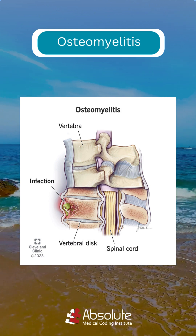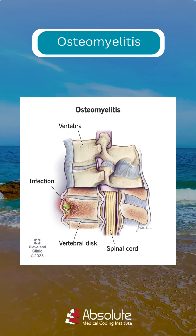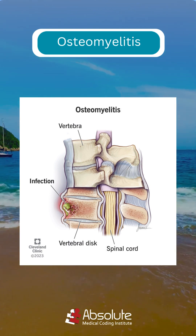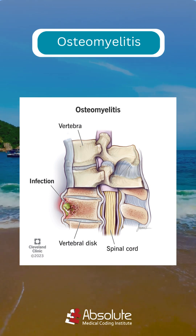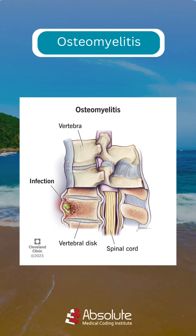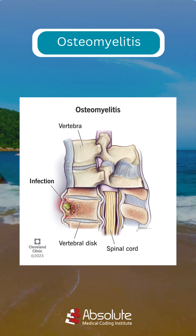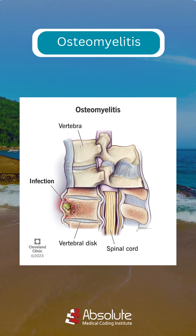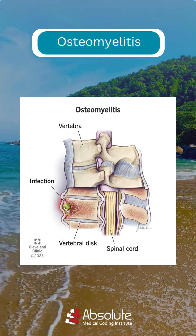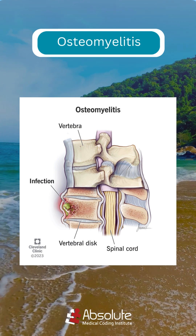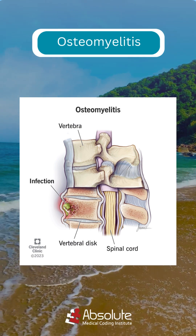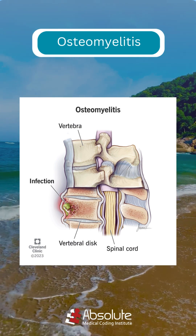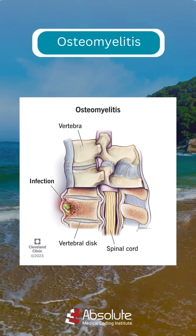These include abscess formation, where pus builds up inside the bone and may break through the skin, and osteonecrosis or bone death caused by loss of blood flow. In severe cases, this may require amputation. We hope you learned something new today.